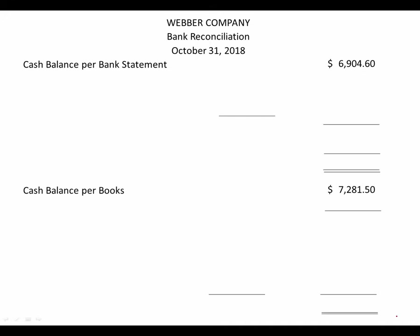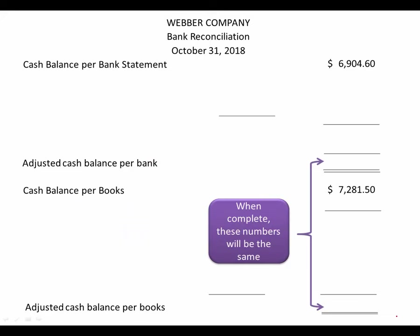As we go through the seven items listed in the problem, we're going to adjust either our bank side or book side to arrive at an adjusted cash balance per bank and an adjusted cash balance per books. Our goal is to have these two adjusted numbers be equal. We will know that we're done and that we did it correctly when those two numbers come out the same.